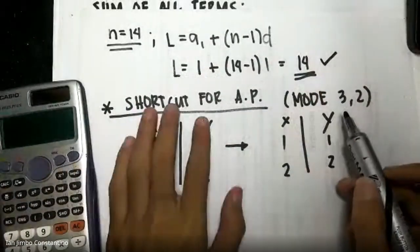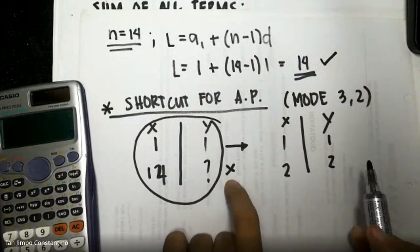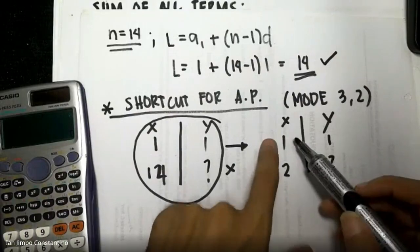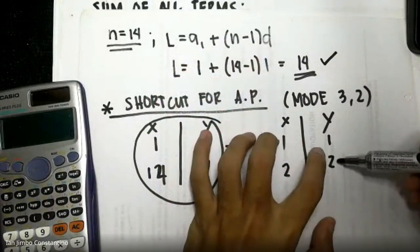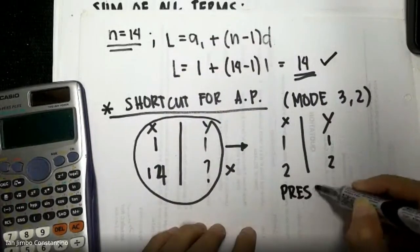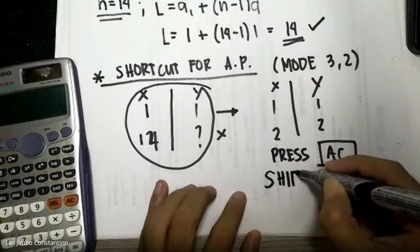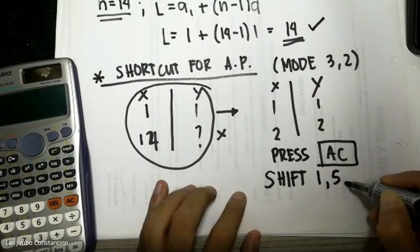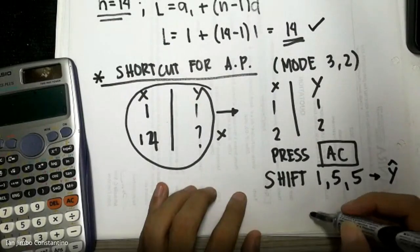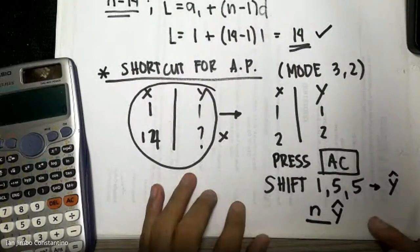To summarize the shortcut: Mode 3, 2. Input two given terms as x-y pairs. Press AC. Then press Shift, 1, 5, and the Ŷ button. Input the term number you want to find before pressing Ŷ to get the value. That is the shortcut for arithmetic progression.